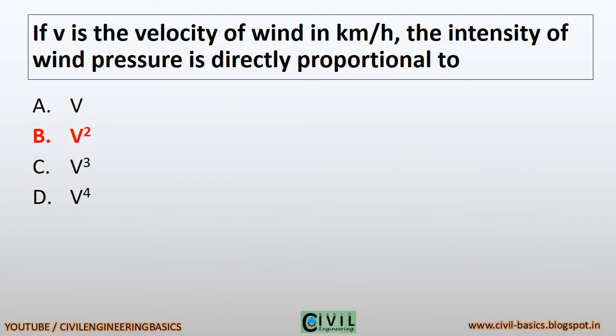If V is the velocity of wind in kilometers per hour, the intensity of wind pressure is directly proportional to V square.